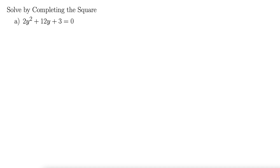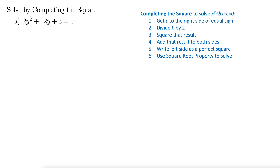We want to solve this one by completing the square. We have 2y squared plus 12y plus 3 equals 0. So let's bring up the steps for completing the square. But here's the thing: these steps only work when a equals 1, and here our a value is 2.